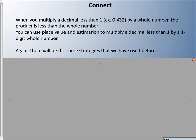Let's talk about this. When you multiply a decimal less than 1, for example, 432 thousandths, by a whole number, the product is less than the whole number. That's important. When we multiply this, the product will be less than the whole number. For example, 2 times 0.432. The answer is going to be less than this. That's just a fact that we need to know.